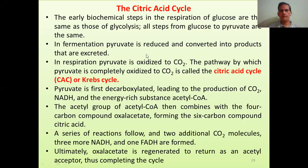In fermentation, pyruvate is reduced and converted into products such as ethanol or lactic acid. These products are waste for the microorganism but are quite useful for industry. In respiration, pyruvate is oxidized to carbon dioxide. The pathway by which pyruvate is completely oxidized to carbon dioxide is called the citric acid cycle or Krebs cycle.